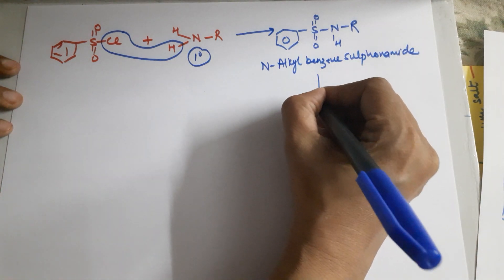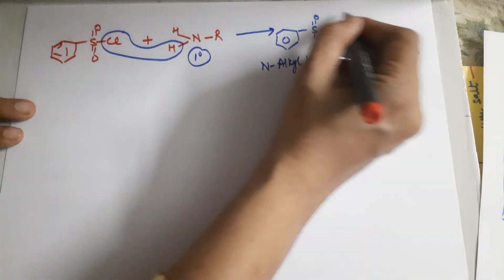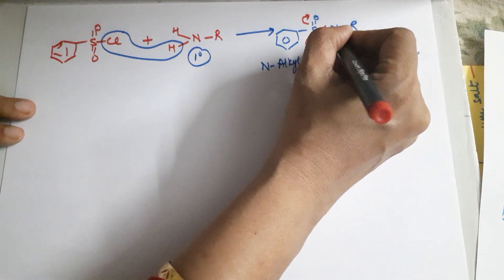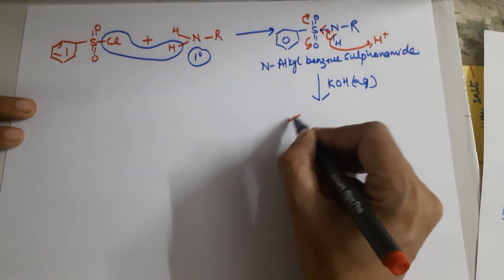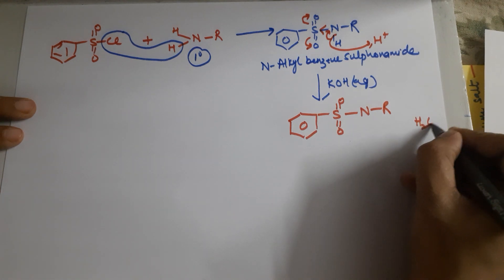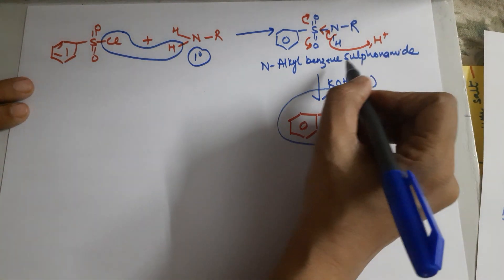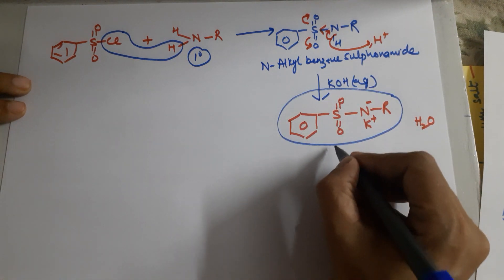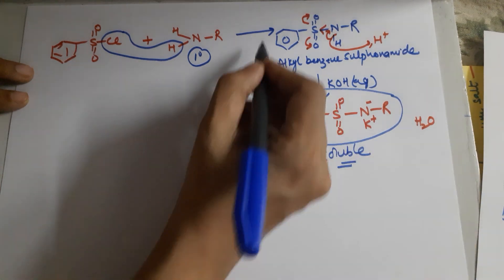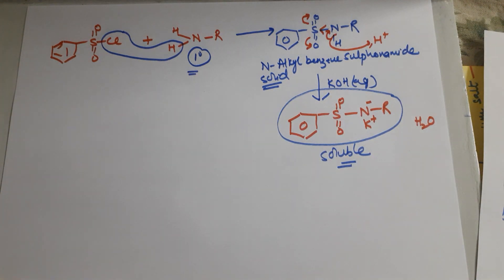After this, you add aqueous KOH. KOH is a base and this sulfonamide is an acidic identity — the oxygens and sulfur all pull electrons, so H positive can be lost. The N loses its H, K's OH combines to give water as byproduct, and you have a K+ and N− — this identity is the potassium salt of N-alkyl benzene sulfonamide. Because it is a potassium salt, it becomes soluble. So first a white solid product forms, which then dissolves in aqueous KOH if you have a primary amine.